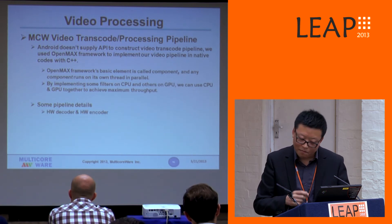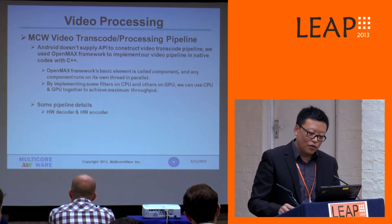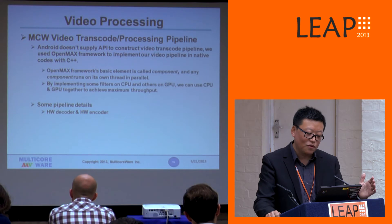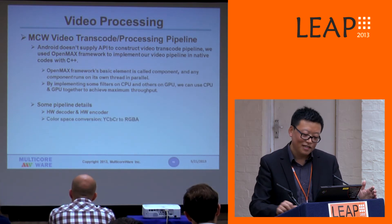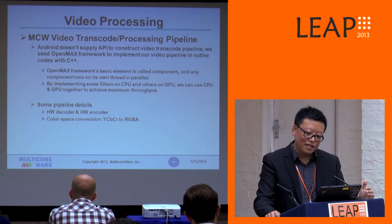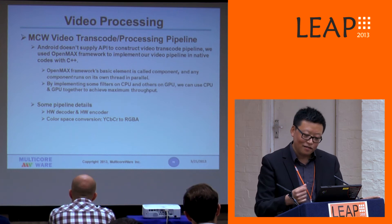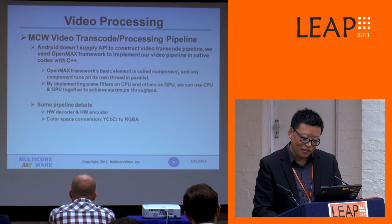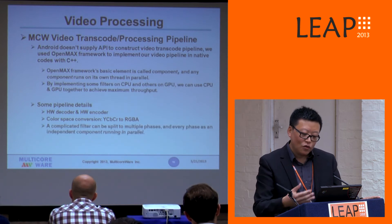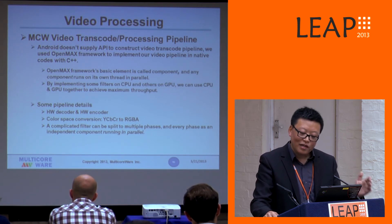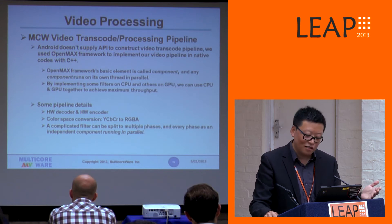Here are some pipeline details. To offload work to CPU and GPU, we want to use both the hardware decoder and encoder. We have implemented the color space conversion from YUV format to RGB format as a component. For some very complicated filters, it is good to split them into multiple phases, putting each phase into an independent component and allowing them to run in parallel.